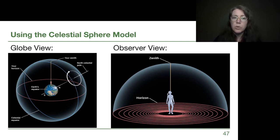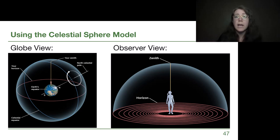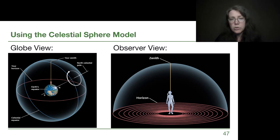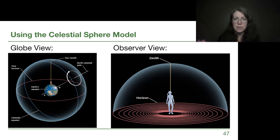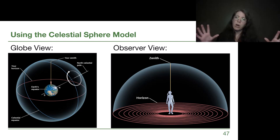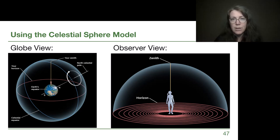On the left we see the globe view where we can see fixed points in space: the North Celestial Pole projected out from Earth's North Pole, the South Celestial Pole, our horizon, and the Celestial Equator shown as a blue circle — Earth's equator projected into space. The observer view is what we can more easily imagine because that is us out in the field looking at the sky, and it's what we'll use most often when drawing. But taking the broader global perspective can help if you get stuck.